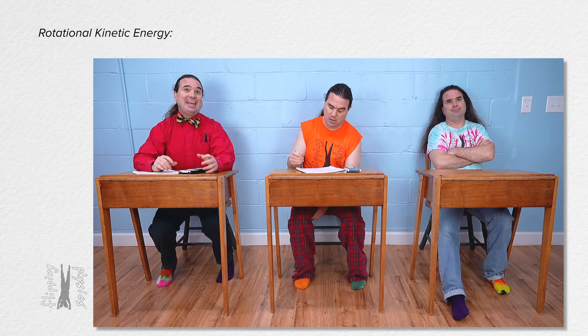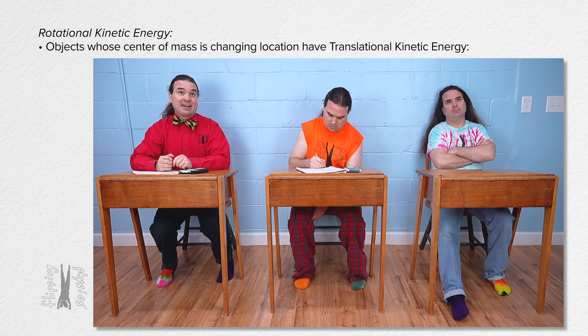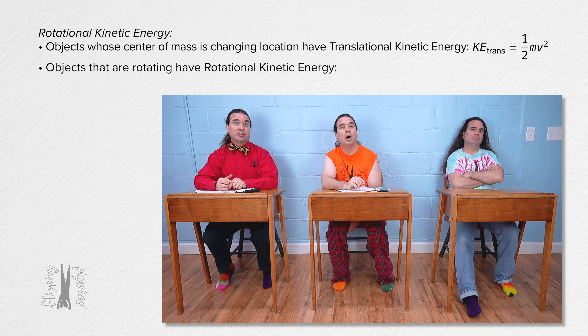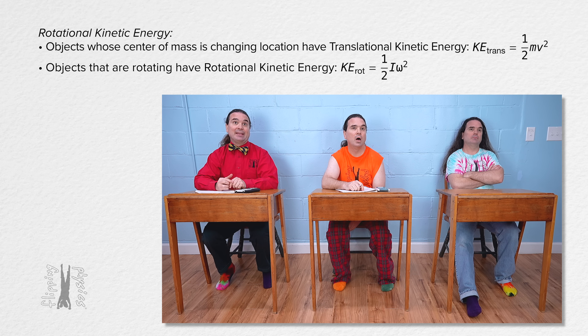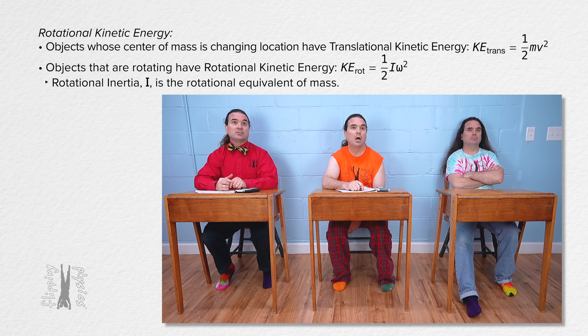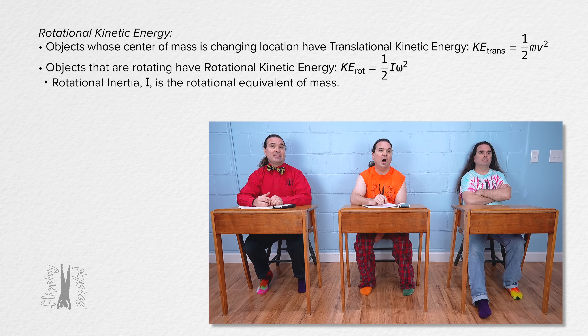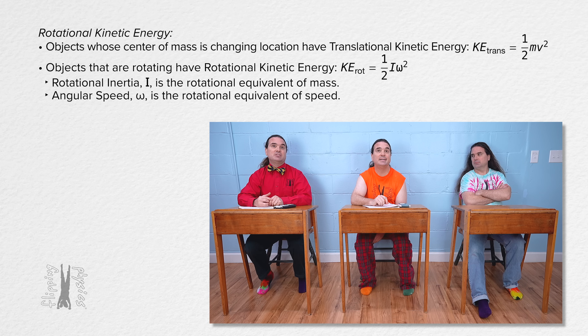Billy, tell me what you know about translational kinetic energy and therefore also rotational kinetic energy. The equation for translational kinetic energy is one half mass times speed squared. The equation for rotational kinetic energy is one half rotational inertia times angular speed squared. From that you can see that rotational inertia is the rotational equivalent of mass and angular speed is the rotational equivalent of speed.